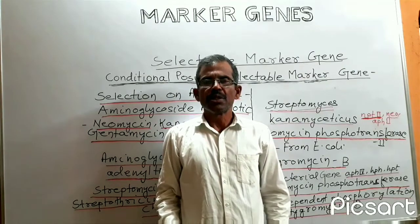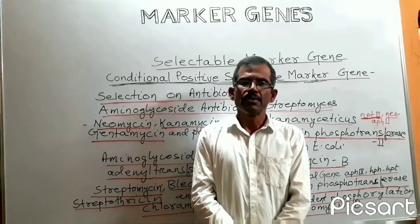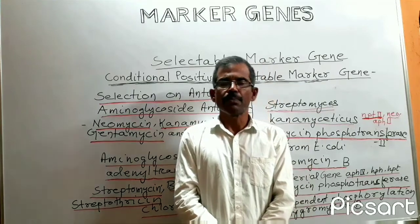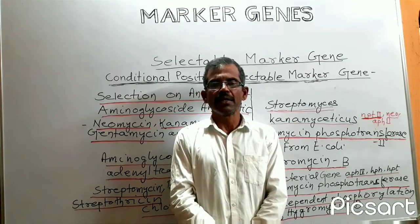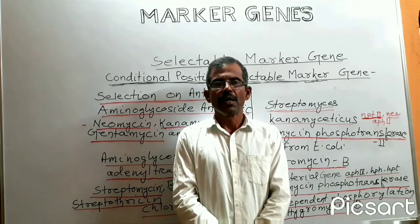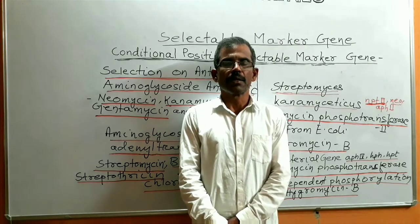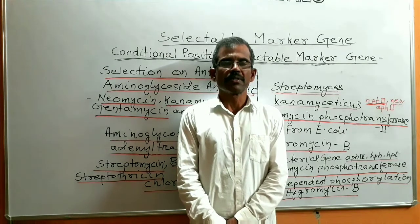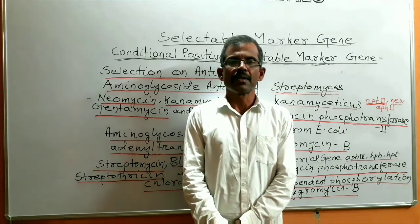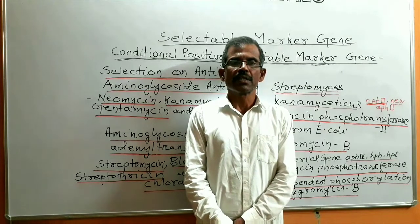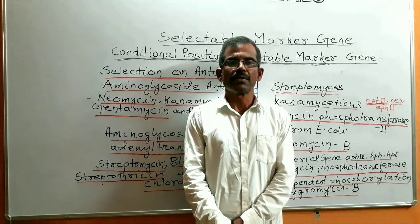The NPT2 gene system functions effectively in a wide range of plant species and is safe for use in feed crops and food crops. It also functions effectively in a variety of microorganisms and eukaryotic cells. When kanamycin is used as the selective agent, only the transformed cells and tissues will grow and differentiate, thereby forming transgenic plants, while the non-transformed cells and tissues get killed due to the absence of kanamycin resistance.